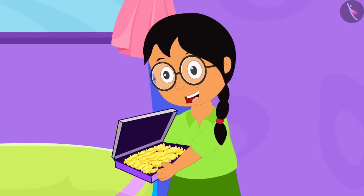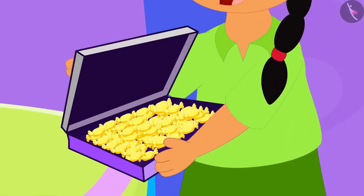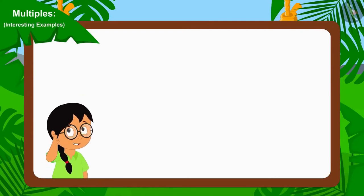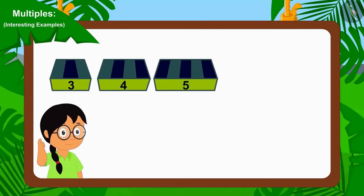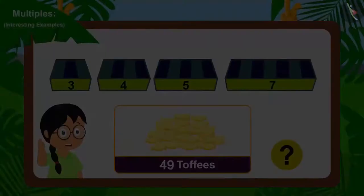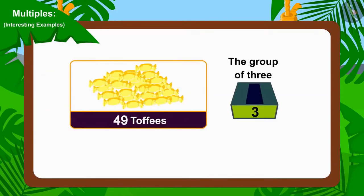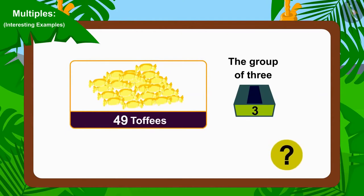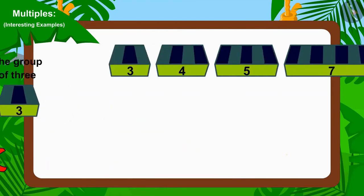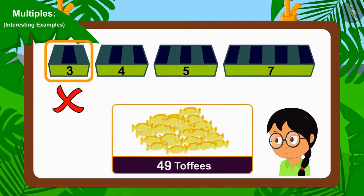First, Meenu is thinking which one out of the group of 3, 4, 5 or 7 should she use so that all the toffees are distributed equally. Let's first try to divide these toffees into groups of 3. We just have to see if we can divide 49 by 3. No, we cannot divide 49 by 3. Therefore, Meenu cannot use groups of 3 to distribute 49 toffees.